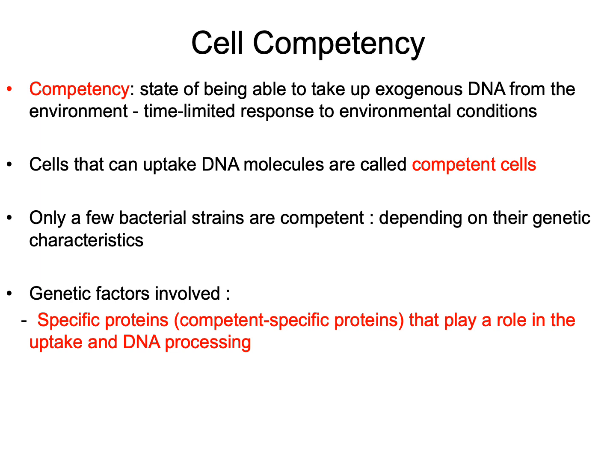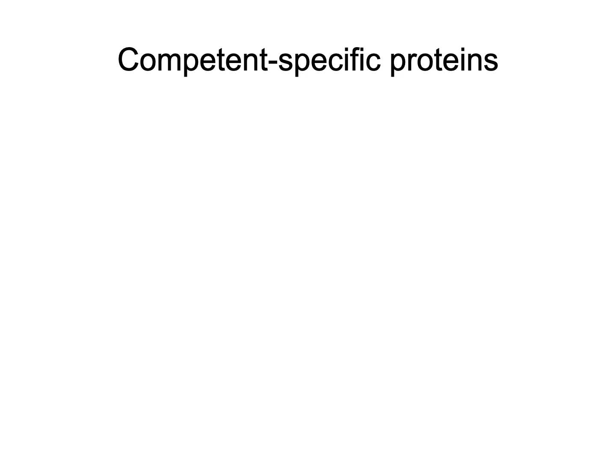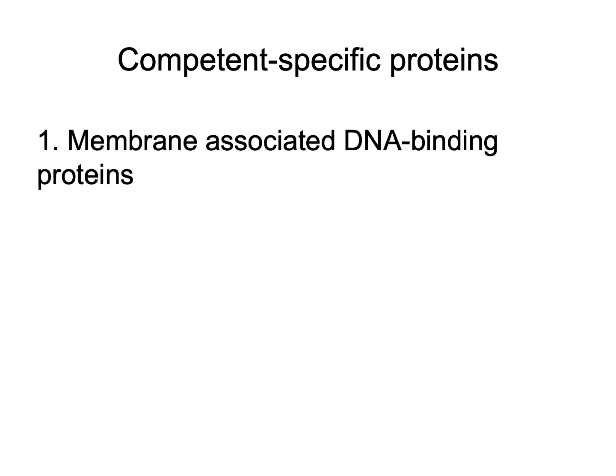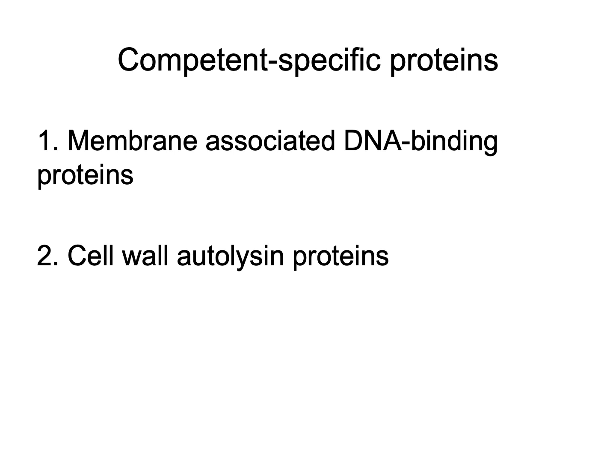Let's take a look at what those competent-specific proteins are. They can be divided into three general classes. First, membrane-associated DNA binding proteins — these work in binding free naked DNA to the recipient cell wall. Second, cell wall autolysin proteins, which help to lyse the cell wall and create an opening. Third, a variety of nucleases — protein enzymes responsible for cutting or degrading DNA depending on the purpose.